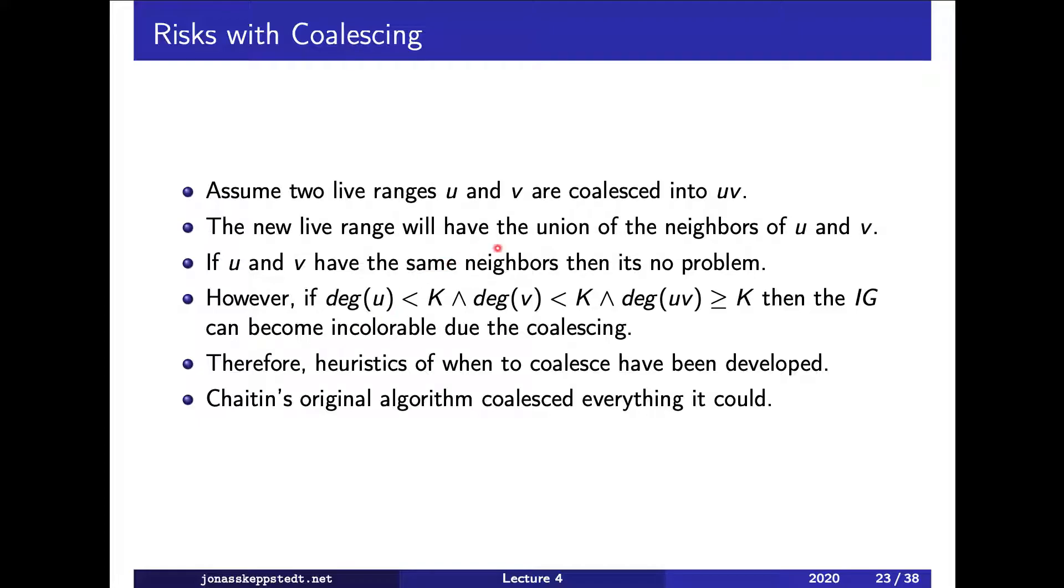and v (which we can call uv), will have the union of the neighbors of u and v. If they have exactly the same neighbors then everything is fine. If they have a few more neighbors then it may be fine.